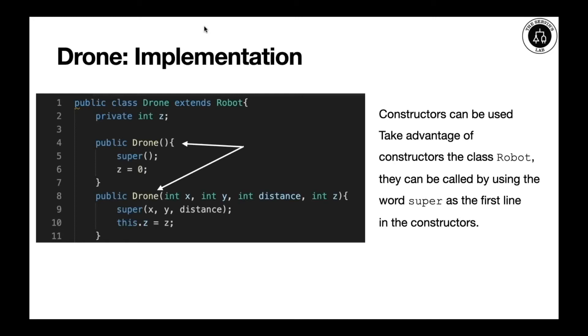The constructor that we have in line 4 corresponds to the non-argument constructor. The one on line 8 is a customized constructor. The one on line 4 doesn't take any parameters, so it will create just a very basic default drone. Whereas the one on line 8, it will contain X, Y, the distance, but also the altitude.